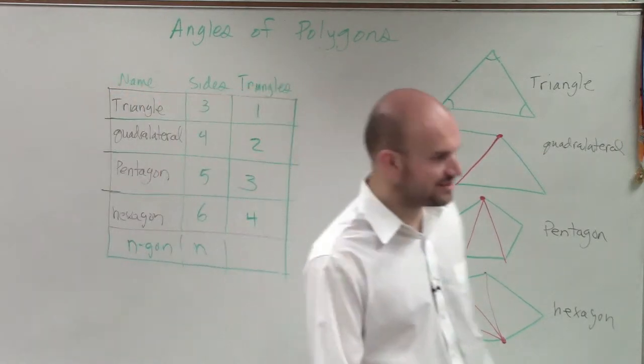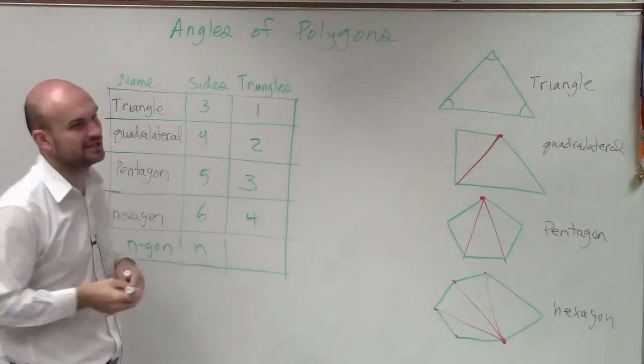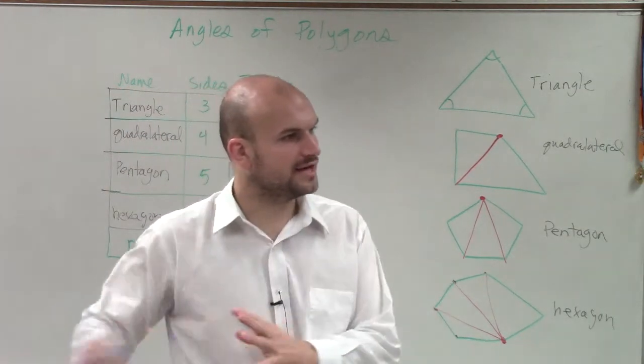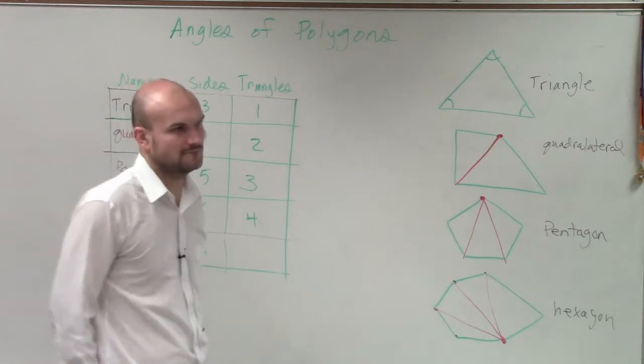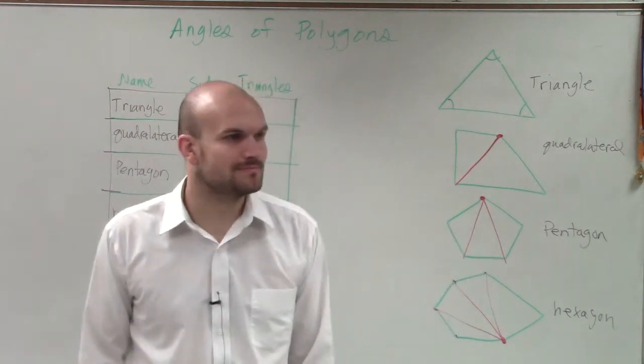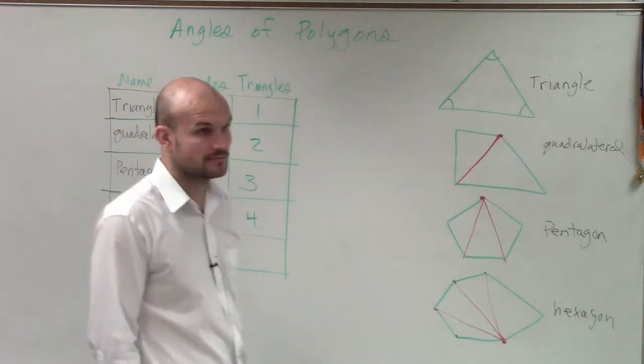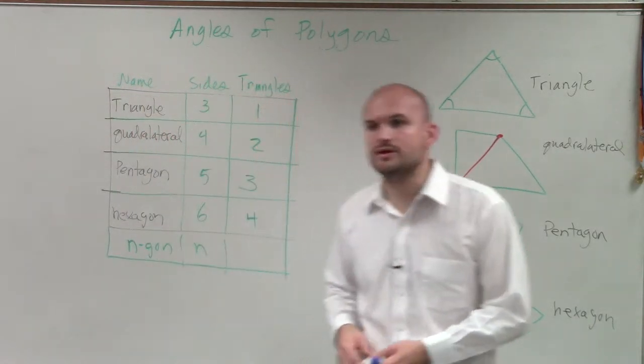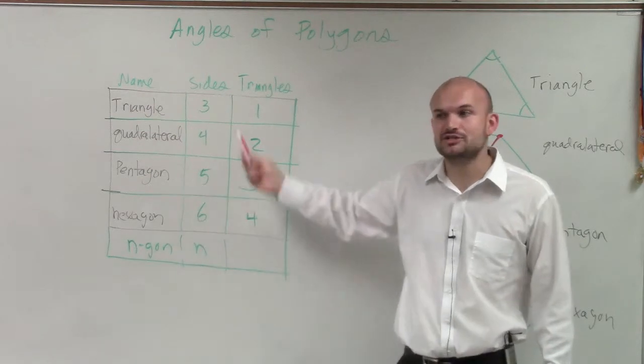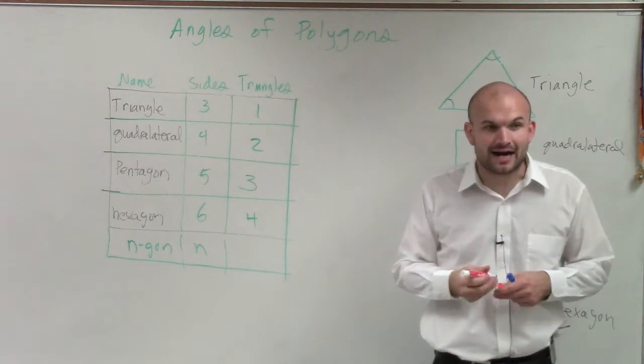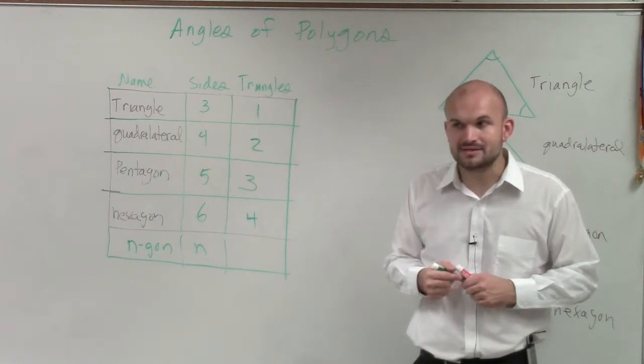All right, now, here comes the big question. Megan, do you see a relationship between the number of sides and the number of triangles that we can create out of it? Let her think. Do you see a relationship between the number of sides and the number of triangles? Kevin, do you see a relationship? What is that? Well, the triangles in it are two minus the sides. Yes, very good. So what you're looking at, Amber, is when you're doing something like this, what you notice is the number of sides minus two gives you the number of triangles. So if I say you have an n-gon, how many triangles is there going to be? n minus two.